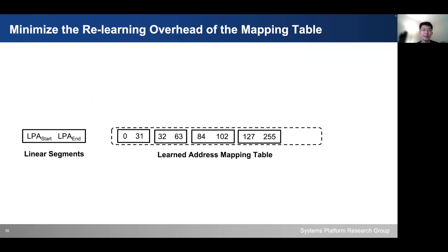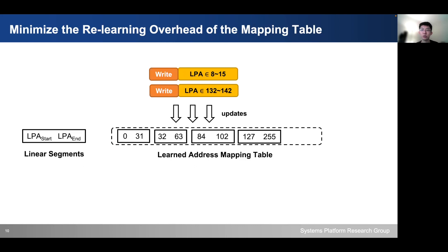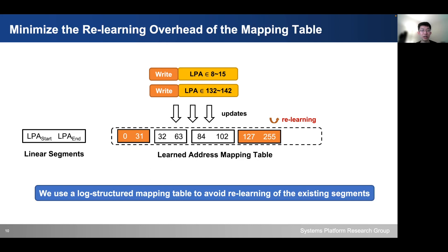The learned address mapping table consists of multiple learned index segments. As the storage workloads are handled by the SSD, there could be many write requests. As SSD performs out-of-place updates, we have to frequently update the corresponding mapping table entries — updating the physical address for the logical address — which incurs relearning of the existing index segments. This brings extra CPU cycles, additional flash accesses, and breaks existing learned index patterns, incurring additional memory footprint. Therefore, we use a log-structured mapping table to avoid relearning of the existing segments.